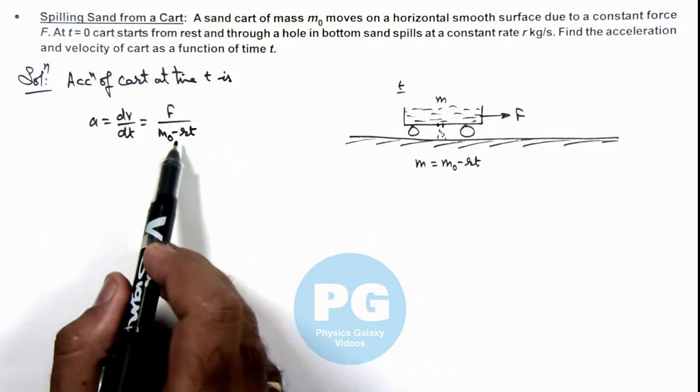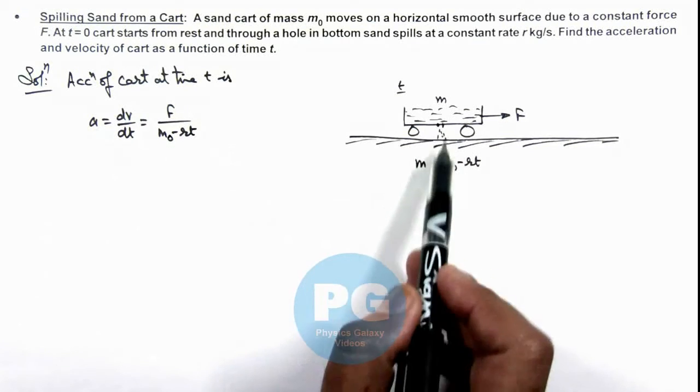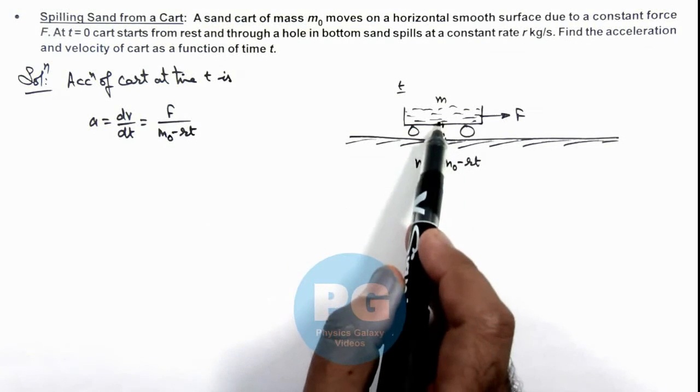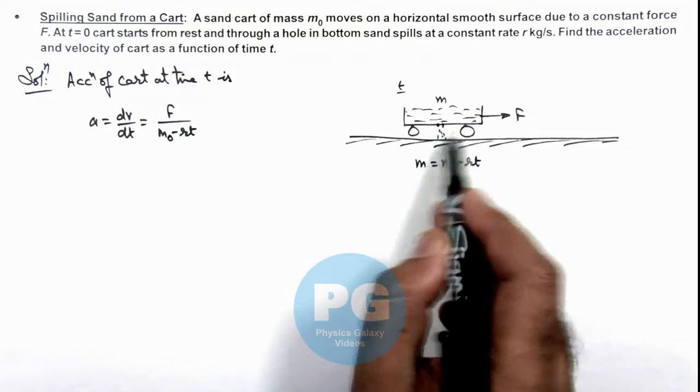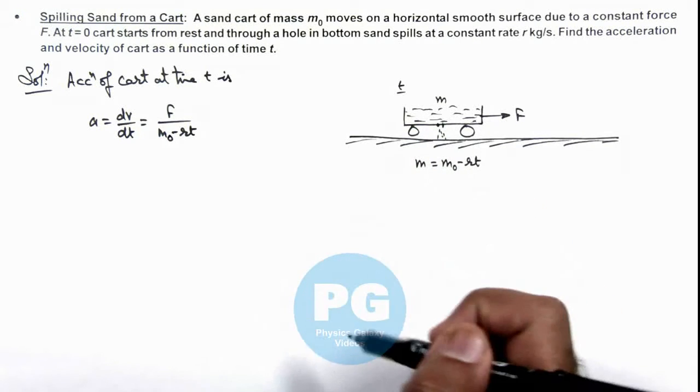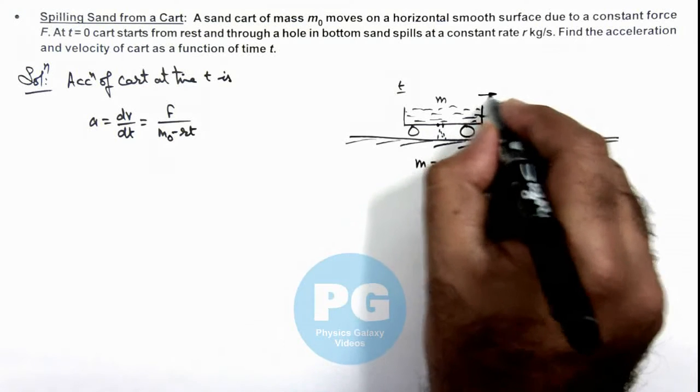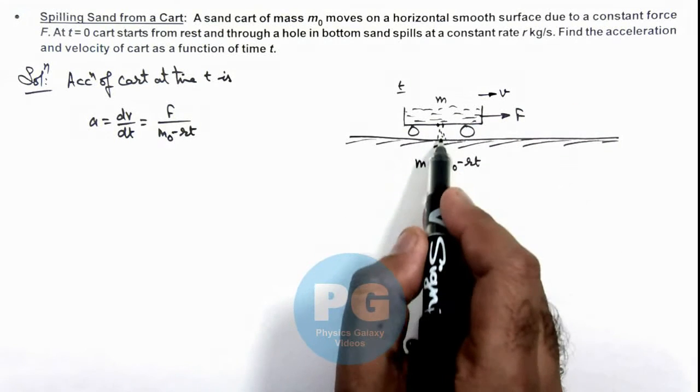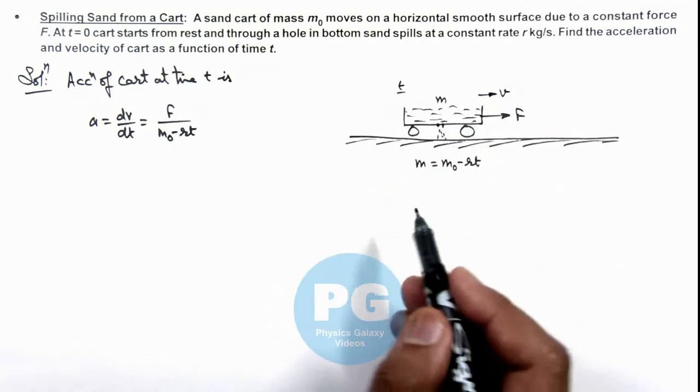Here, I've directly written the acceleration without considering the variation of mass because mass is leaking out at the same speed with which the cart is moving. Say if it is moving at a speed v, the sand which is spilling out is also having the speed v.